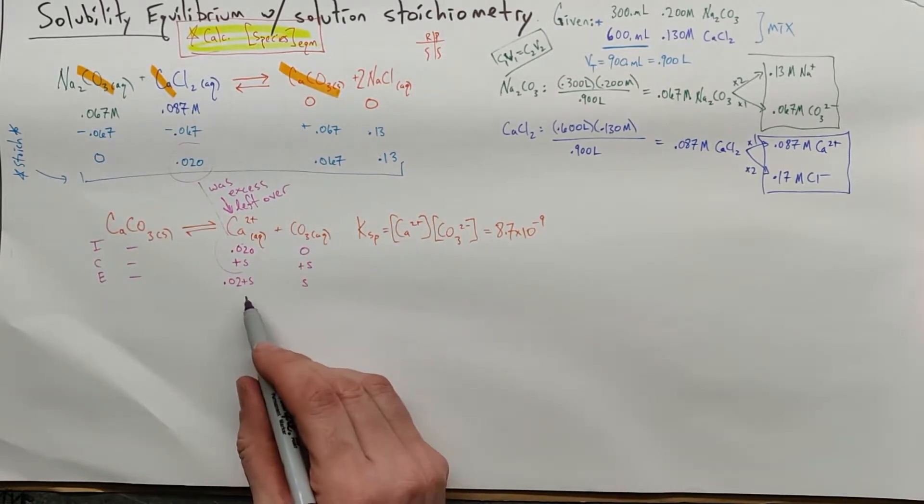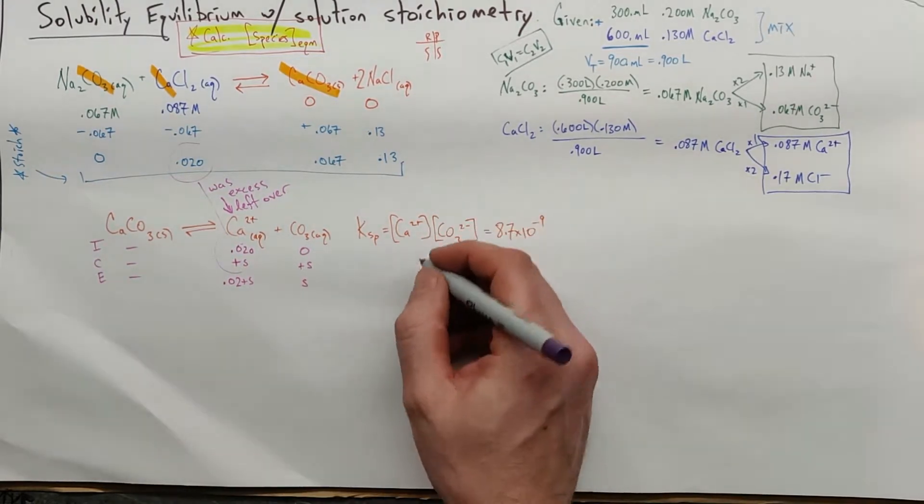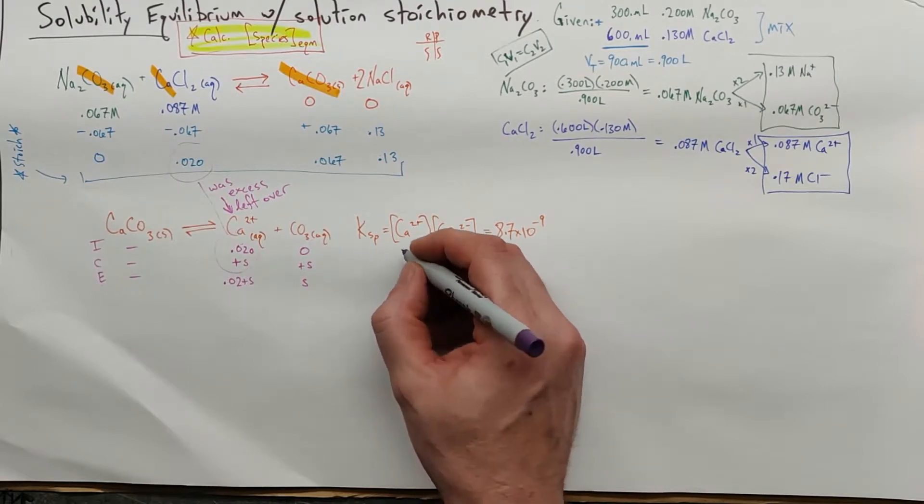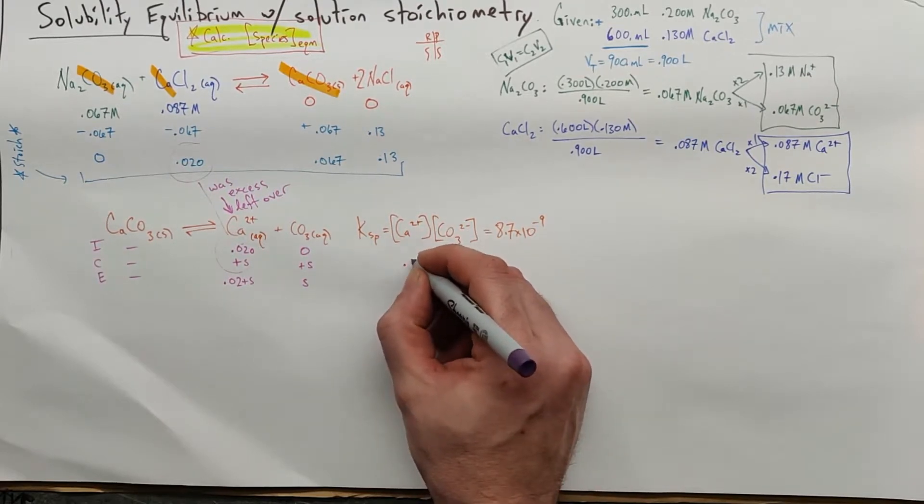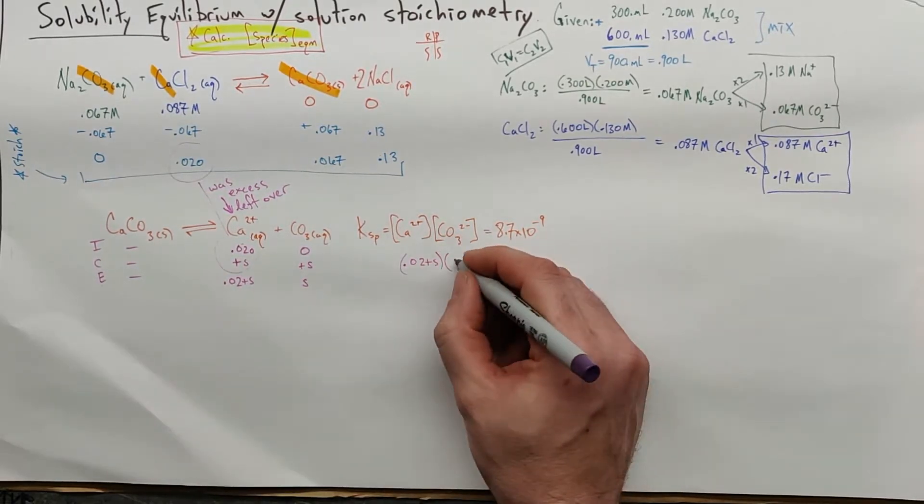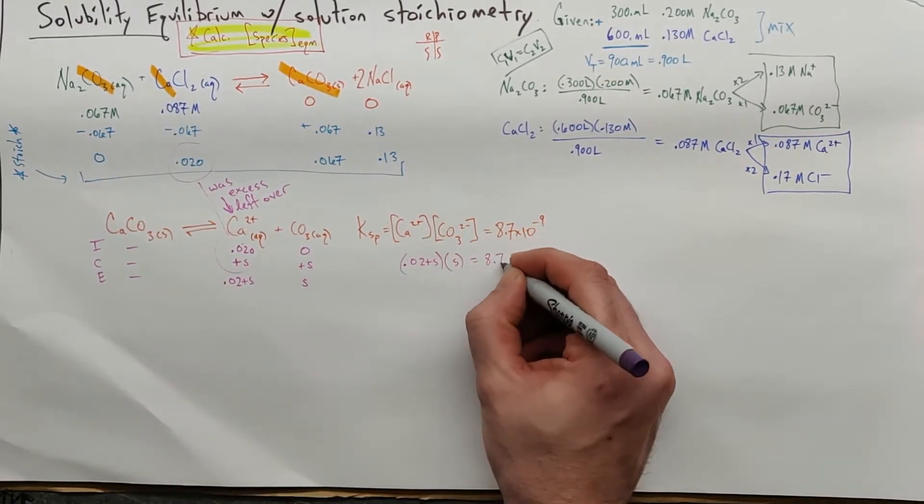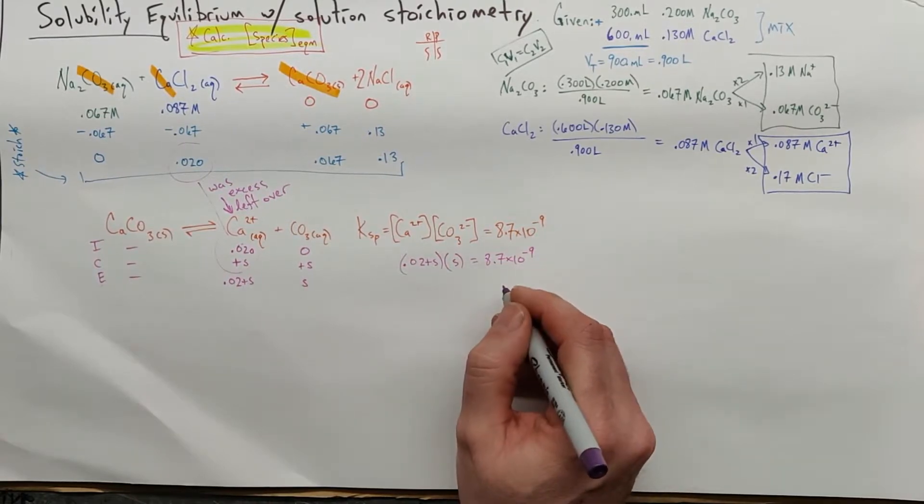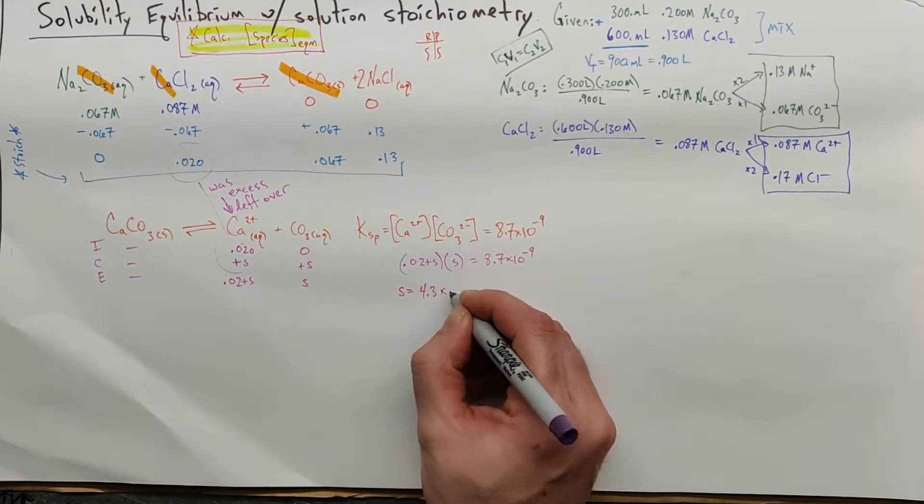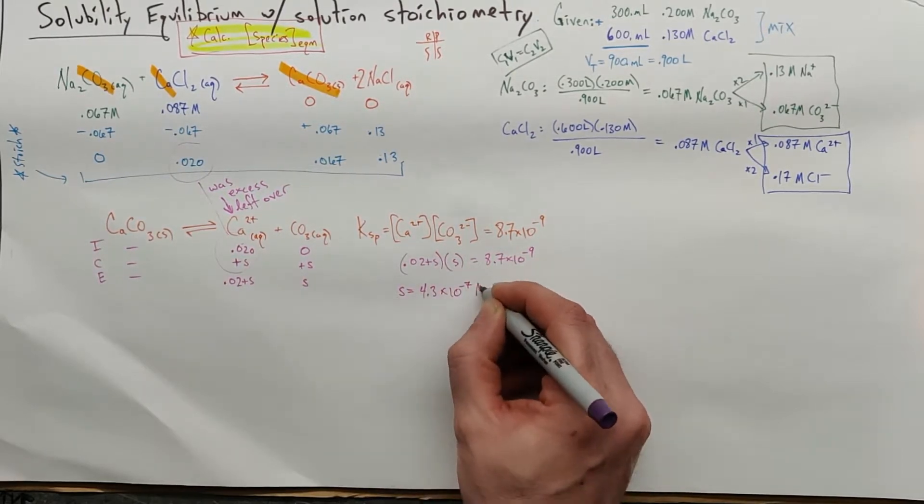It's a pretty safe bet S is going to be smaller than the 0.02, but again your calculator can do it. There's no reason to try and assume things and go back and check them. It's not worth the time. So 0.02 plus S times our S, and that should equal 8.7 times 10 to the minus 9th. And that gives us a solubility of 4.3 times 10 to the minus 7th. S equals 4.3 times 10 to the minus 7th molar.